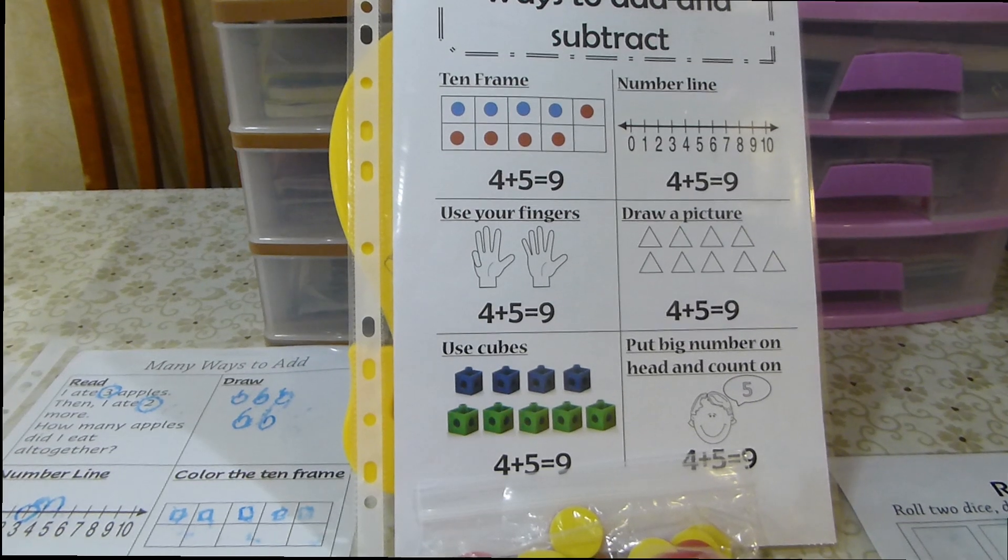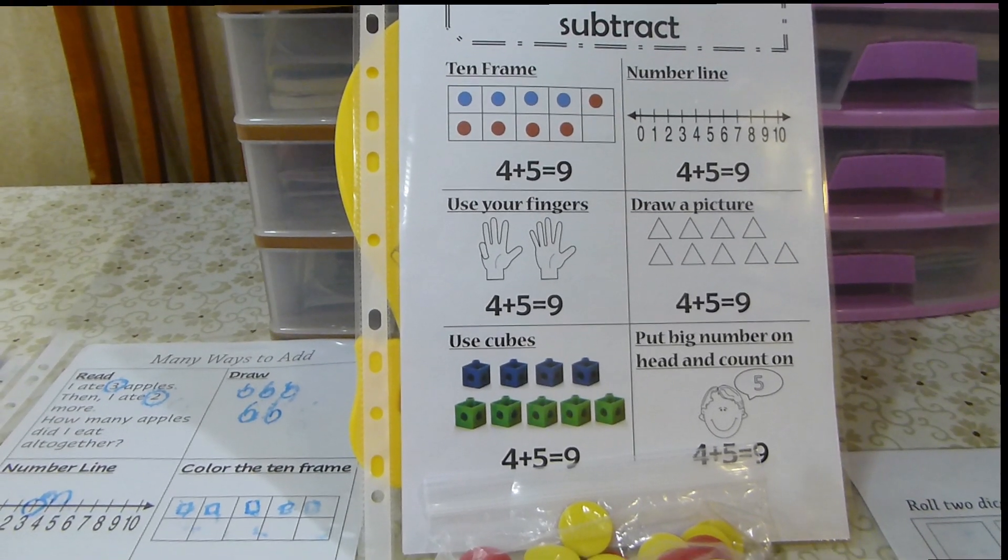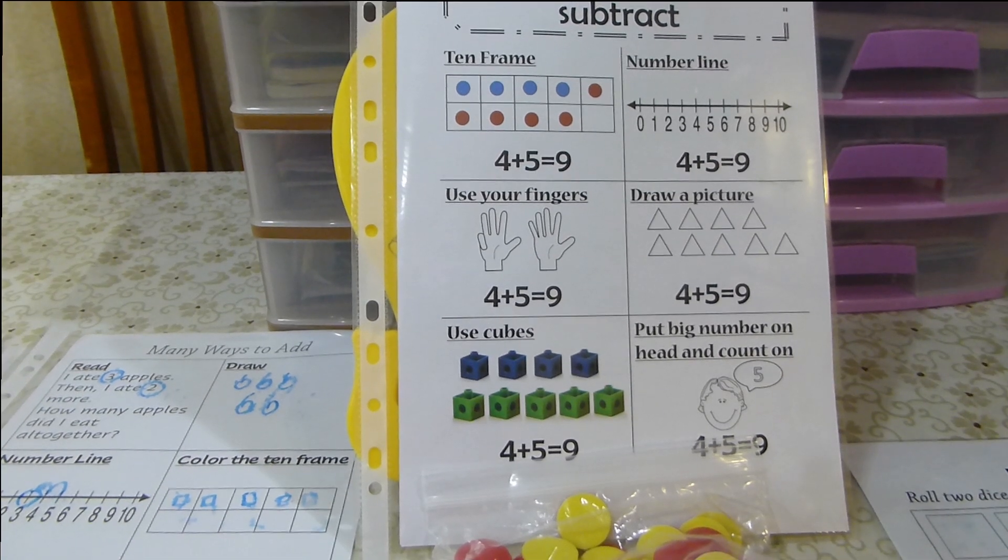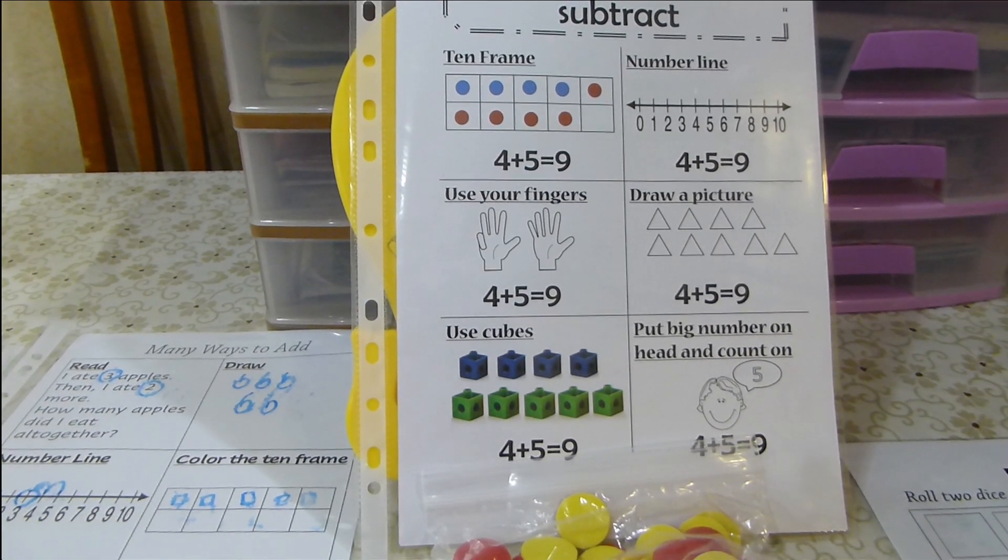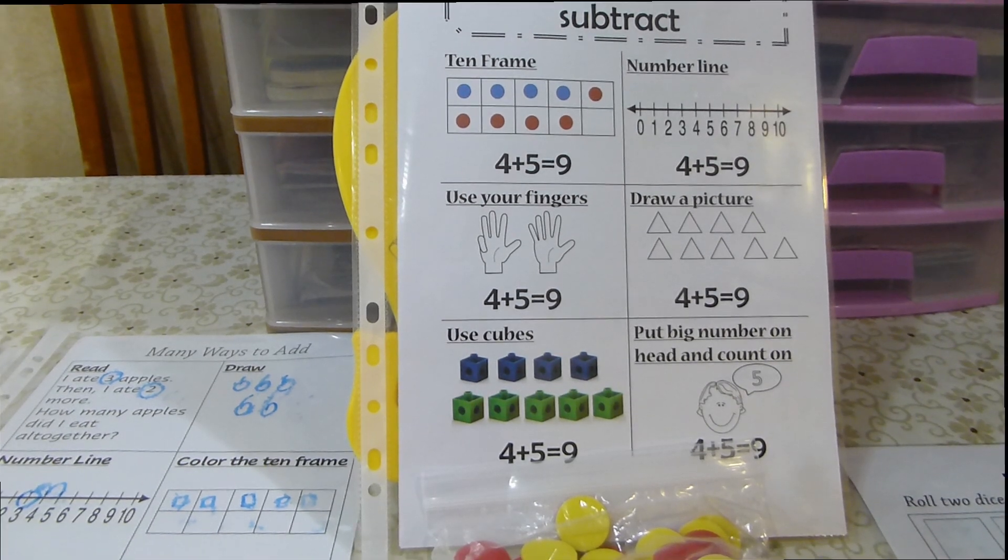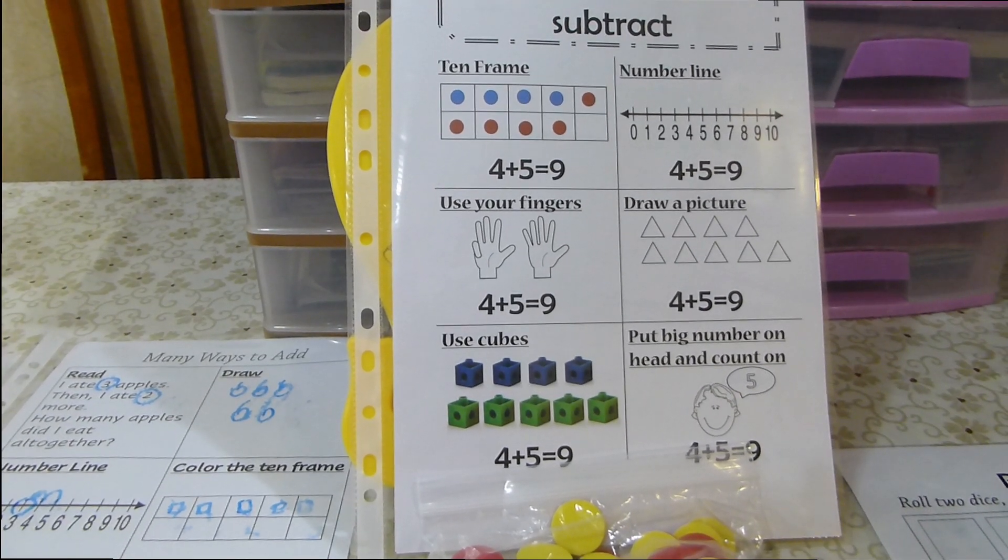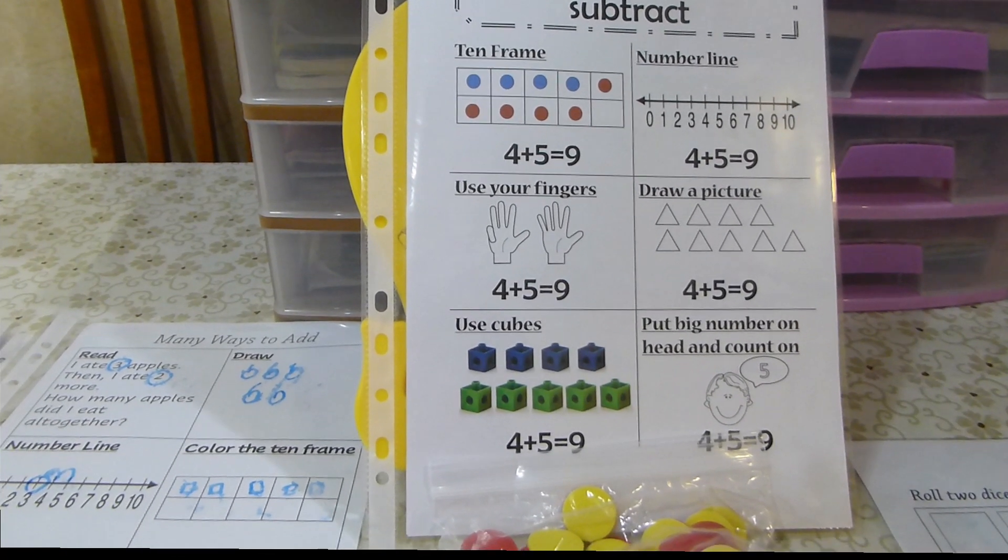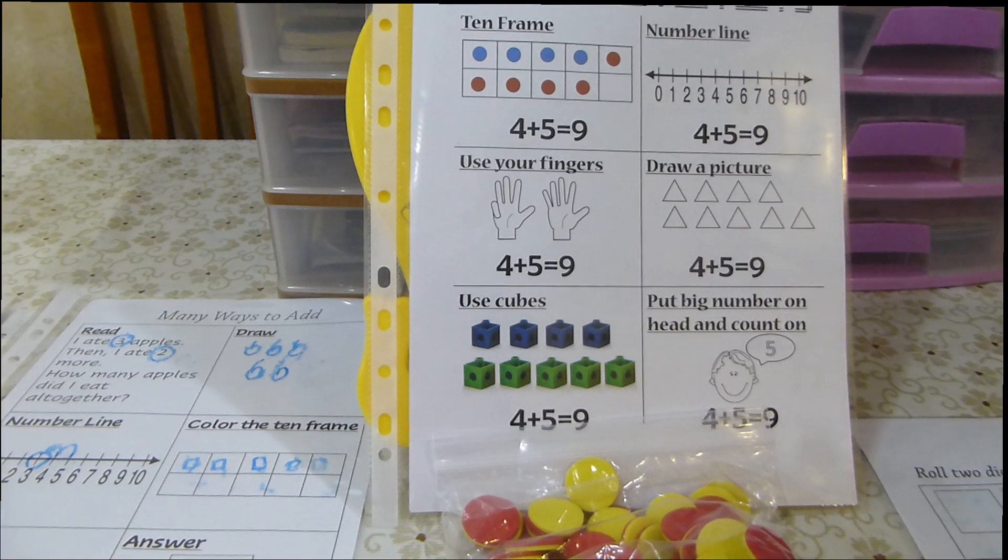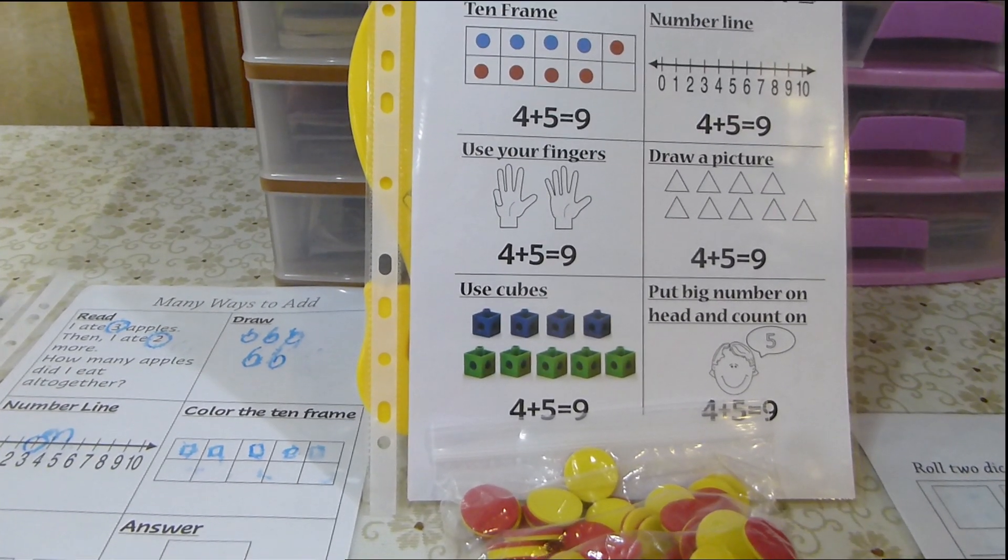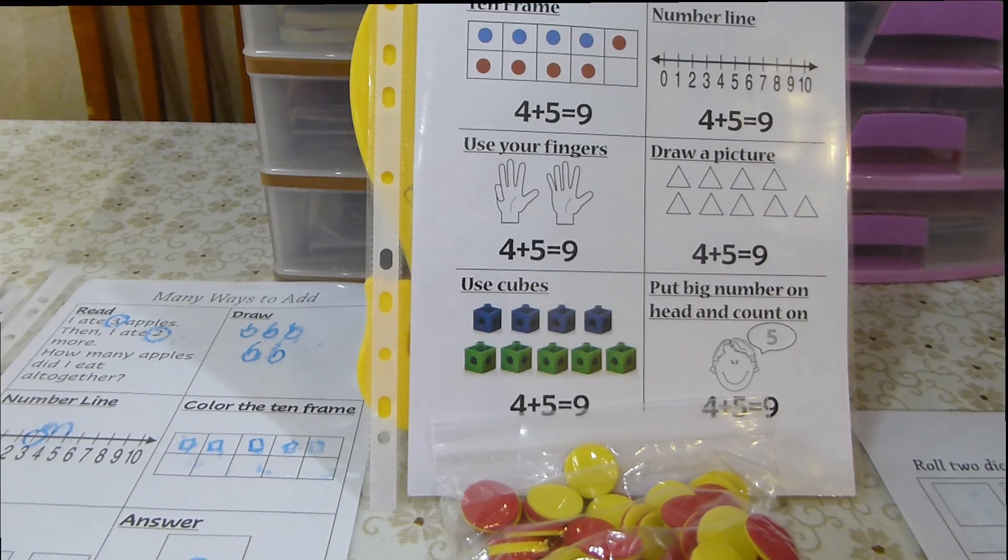The first strategy that you can use with your child today is the 10 frames strategy. The second one is the number line. The third is use your fingers, both fingers and hands. The fourth is to draw pictures or dots. The fifth is to use the cubes or any other kinds of manipulatives, maybe counters if they are available. And the last one is to put the big number on the head and then count on.